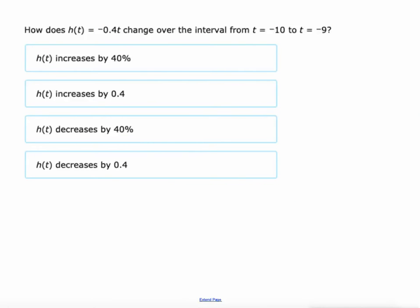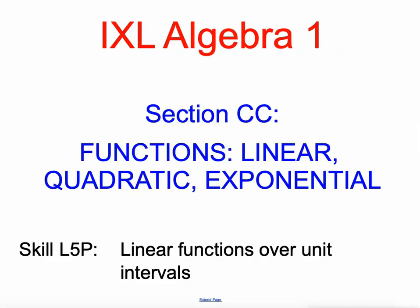So at the very end, in the challenge zone, they give you this problem. Again, it's still just an increase of 1. It's an interval of 1, I guess. Maybe I should use the word interval. And there's our change over an interval of 1. It's the slope of the function. At least that's the case with linear functions. So decreases because it's negative by 0.4. All right, so that's linear functions over unit intervals. You're going to fly through it. Good luck.